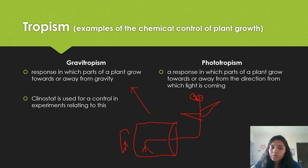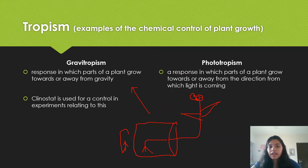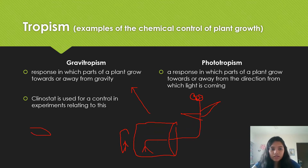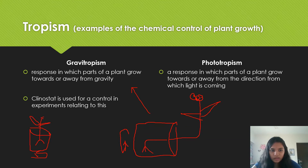Phototropism is a response in which parts of a plant move towards or away from the direction from which light is coming. The control for this is when you put the plants facing upwards and rotate them in that direction.